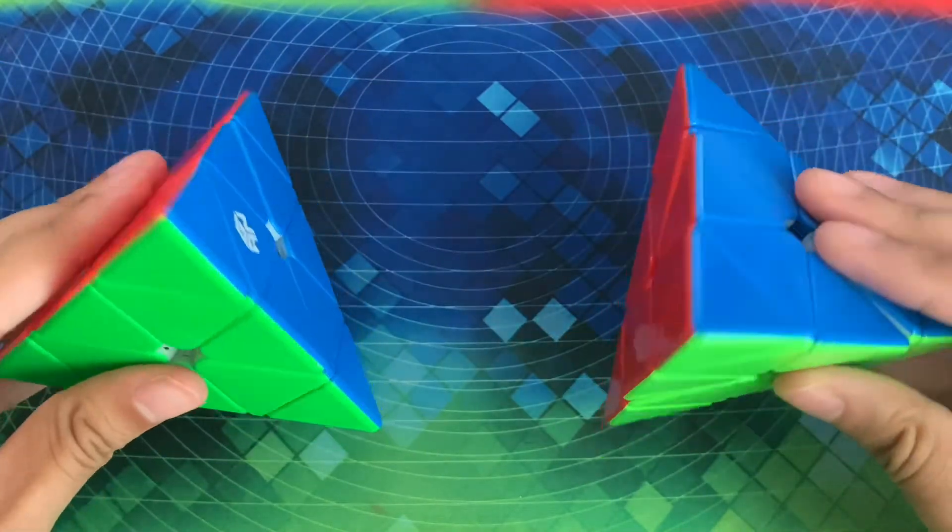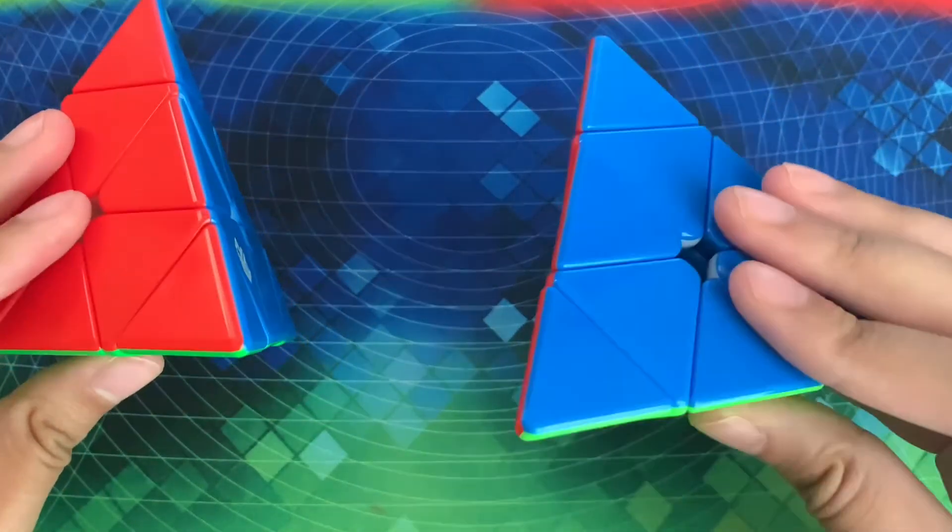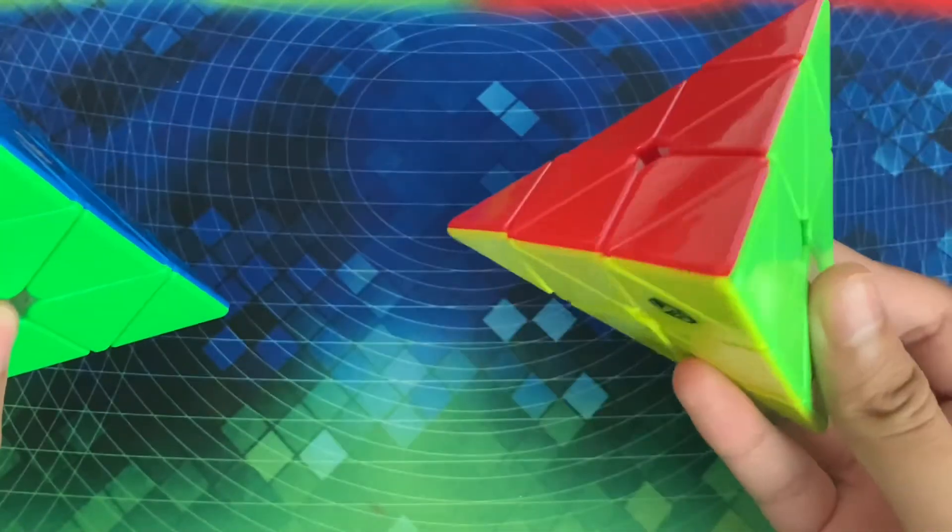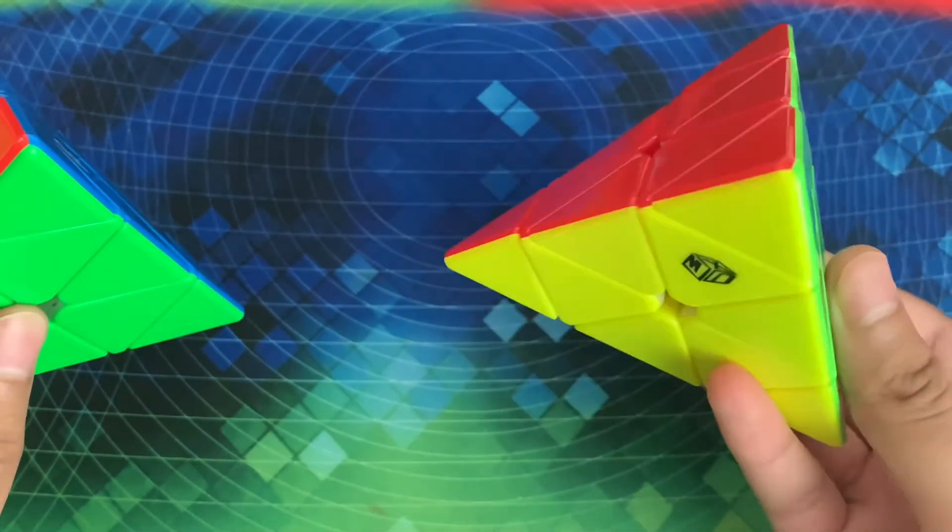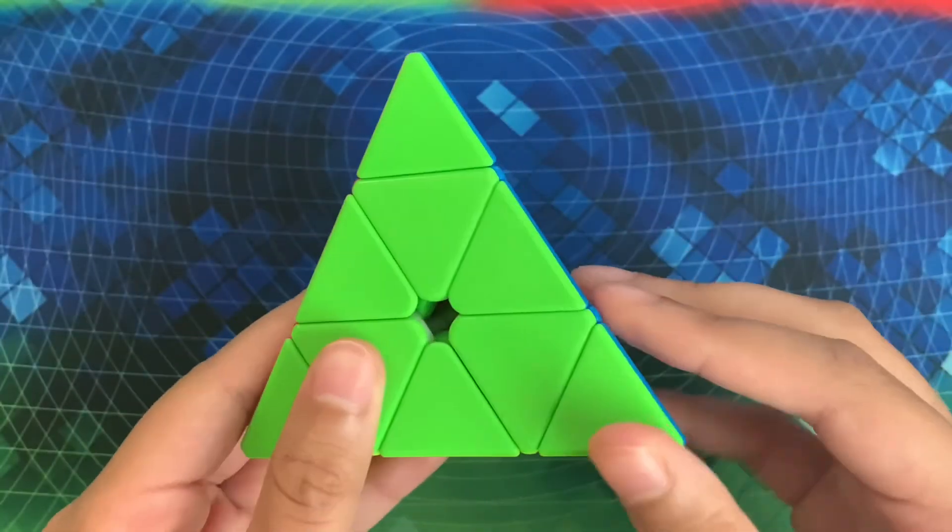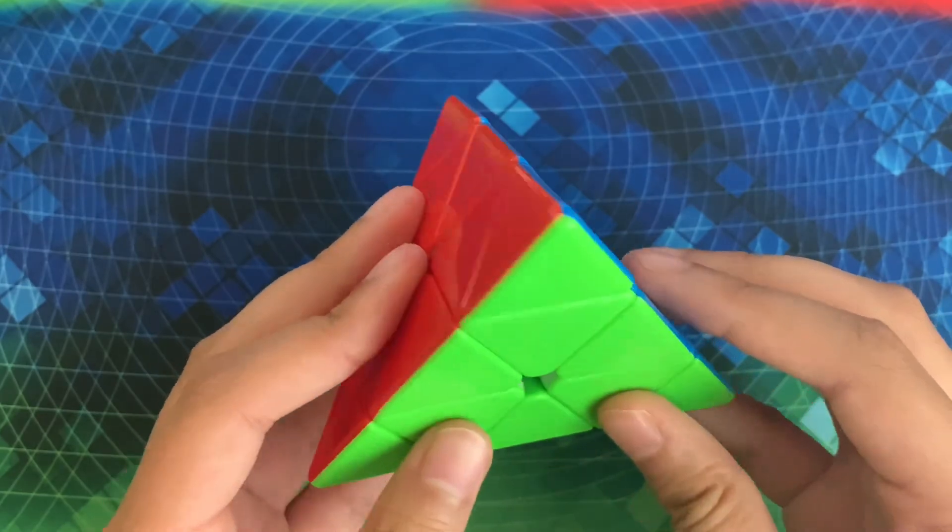Moving on to Pyraminx, which I do not care about at all. My main is the X-Man Bell V1, and my backup is the GAN standard. I like this one a lot more right now because it's heavier and more reliable. My goal is to get a sub-9 average and a sub-7.8 single.